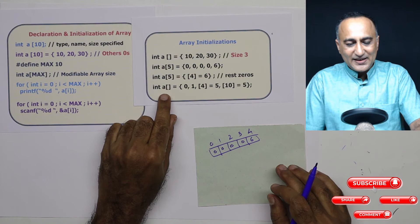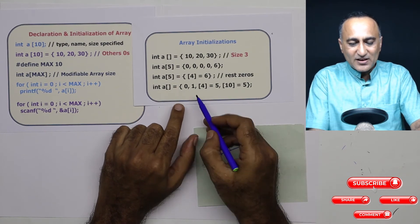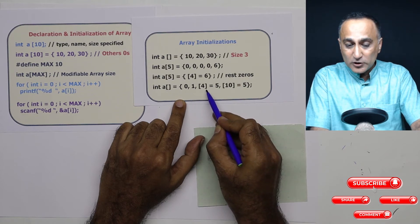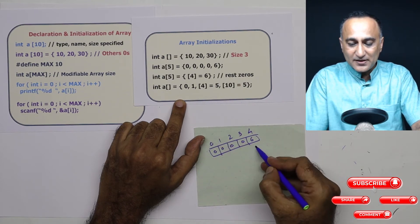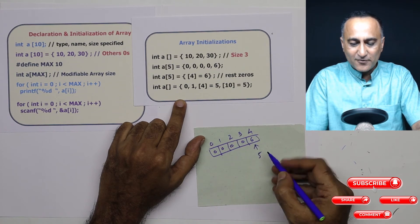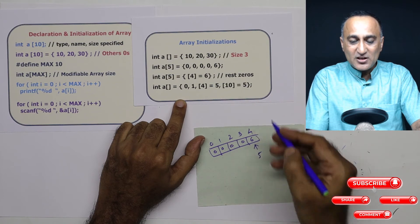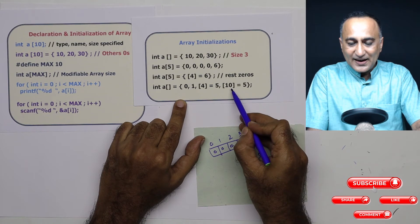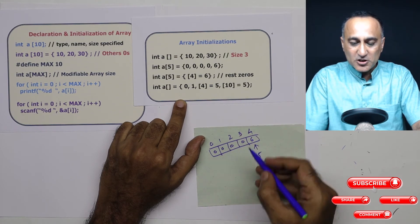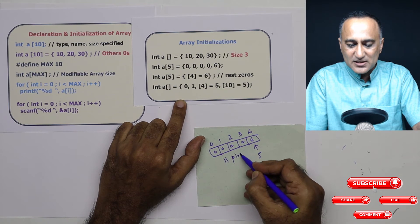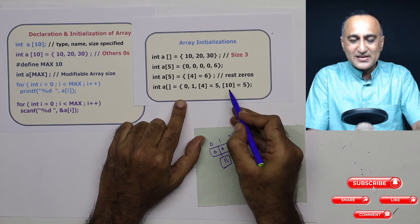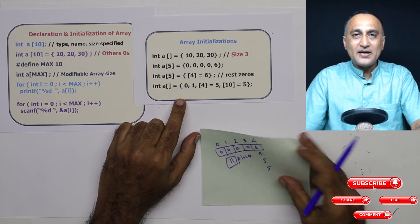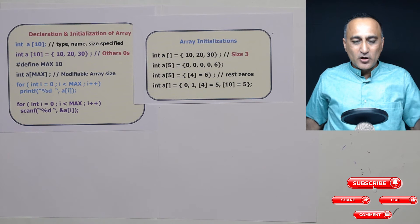Here what I have done is I have declared int a, size is not specified. But I have done some initialization: the zeroth element is zero, the first element is one, then the fourth element I've initialized with five, then the 10th position I've initialized with again five. Since I'm starting from zero and 10 is the last position, I will have 11 places in this particular array. That means the size of this array is going to be 11 integers or it can hold 11 integers.